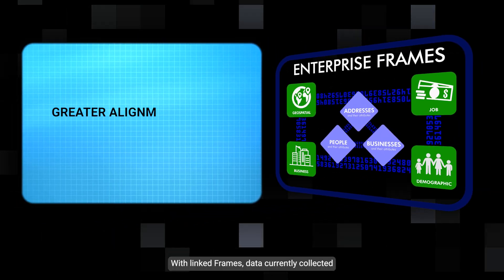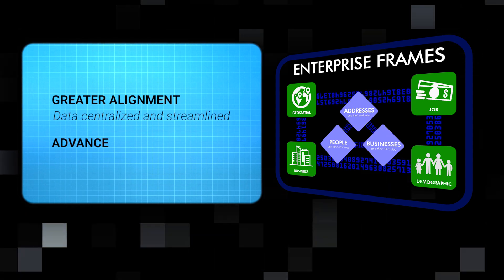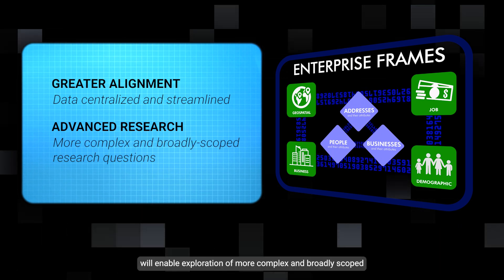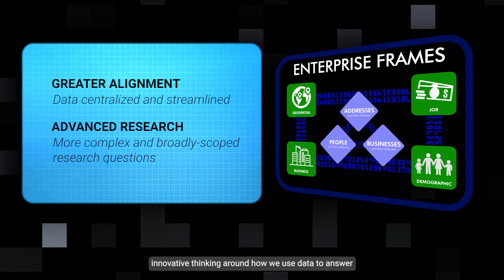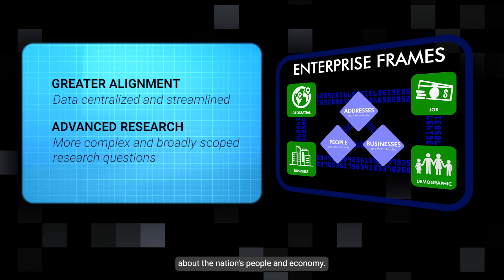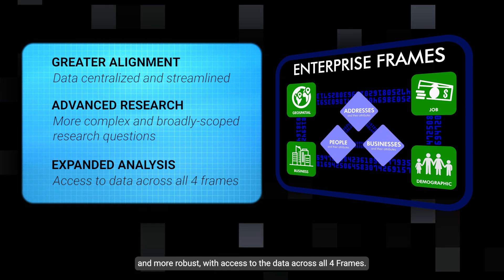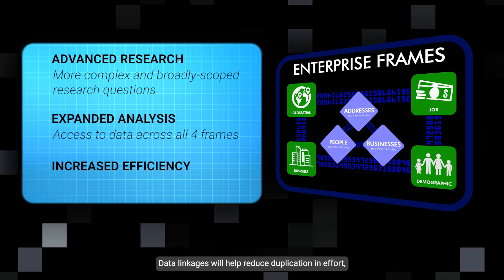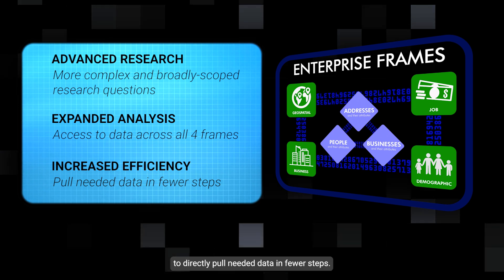With linked frames, data currently collected by multiple teams using multiple methods can be centralized and streamlined. New linking methods and curated subject matter expertise will enable exploration of more complex and broadly scoped research questions that will support innovative thinking around how we use data to answer critical questions more efficiently about the nation's people and economy. Data analysis will be simplified, repeatable, and more robust with access to the data across all four frames. Data linkages will help reduce duplication in effort and allow Census Bureau analysts and product creators to directly pull needed data in fewer steps.